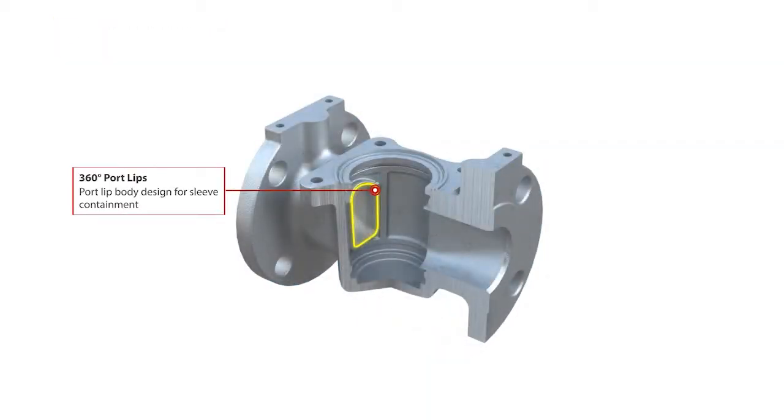The body casting has 360-degree lips around the ports. These keep the sleeve in place, preventing sleeve rotation while the valve is being operated.